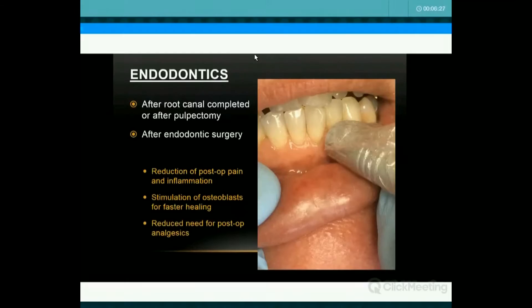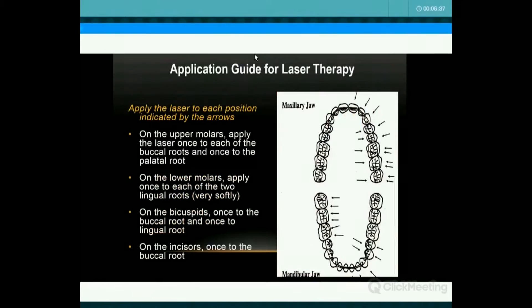After root canal and similar procedures, I apply it to the apex using a bioinhibition dose. On the anterior teeth I apply it from the buccal surface. Bicuspids often have two roots, so buccal and lingual. On the upper molars I apply it to all three roots. On the lower molars, if the tongue isn't too big and the patient isn't a bad gagger, I apply it to the lingual surface because the bone is much thinner. On the buccal you've got the large external oblique ridge, so it's harder to get the light down to the apex.